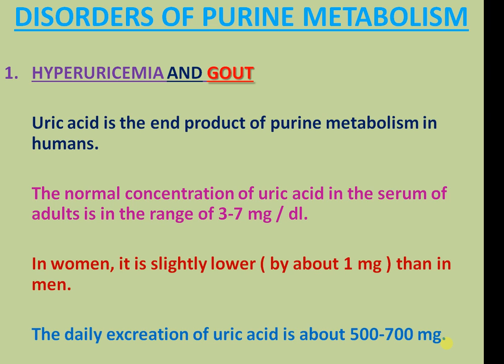Disorders of Purine Metabolism: Hyperuricemia and Gout. Uric Acid is the end product of Purine Metabolism in humans. The normal concentration of Uric Acid in serum of adults is in the range of 3 to 7 mg per deciliter. In women, it is slightly lower by about 1 mg. Daily excretion of Uric Acid is 500 to 700 mg.